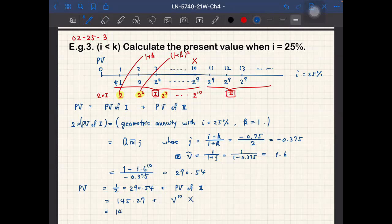And 145.27 times 1.25, 25% interest, so 1.25 to the negative 10th power times A angle infinity times 2 to the 9th power at 25%.